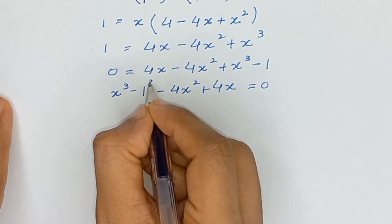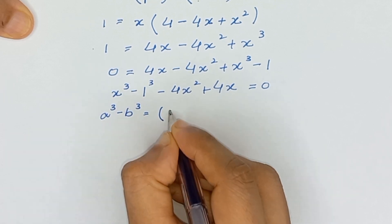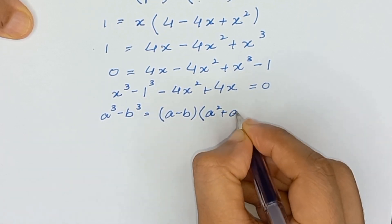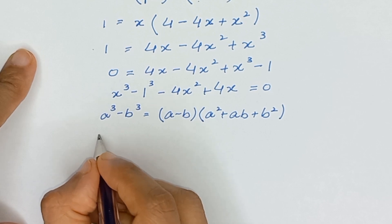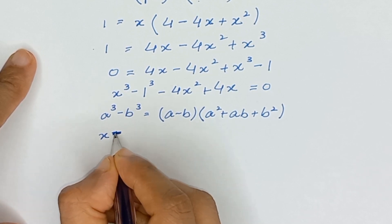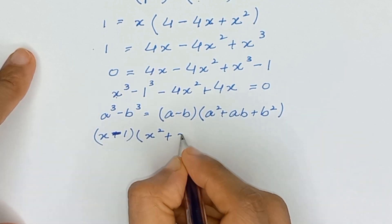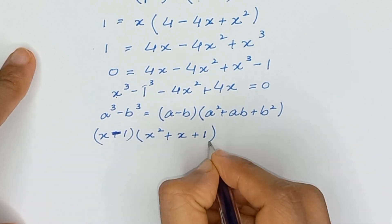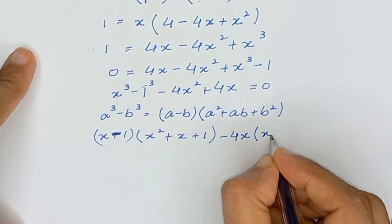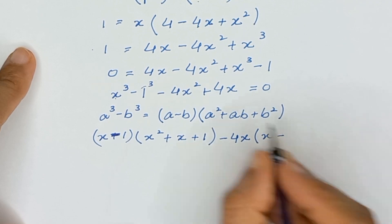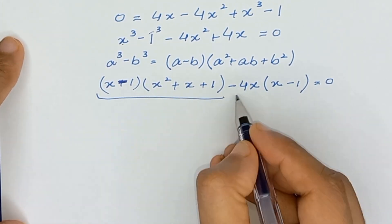We notice that x cubed minus 1 can be written as x cubed minus 1 cubed, which is in the form a cubed minus b cubed equals (a minus b)(a squared plus ab plus b squared). So it factors as (x minus 1)(x squared plus x + 1). From the remaining two terms, negative 4x squared plus 4x, we factor out negative 4x, giving negative 4x times (x minus 1).